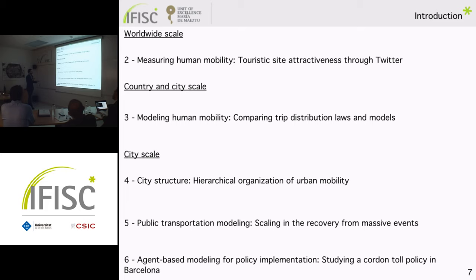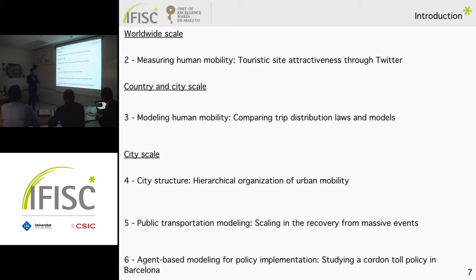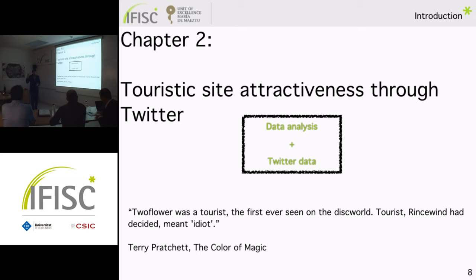Talking about the worldwide scale of movement, tourism is one of the main drivers. Tourism generates millions of dollars but also affects the local environment and inhabitants. Traditional data sources like censuses and surveys are often not enough. With this work, we wanted to test whether we can use location-based social networks to better understand tourism and provide a measure of attractiveness of touristic sites. We used Twitter data covering 59,000 users to evaluate the attractiveness of 20 touristic sites by studying the residence place of these users.